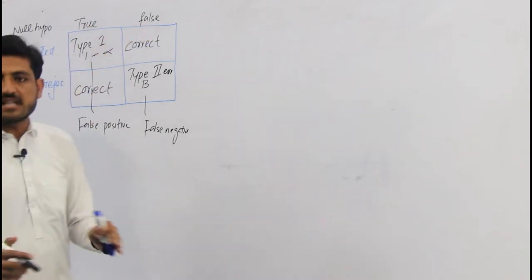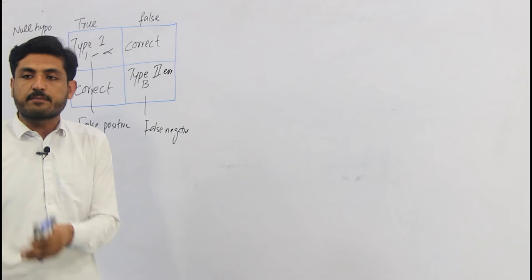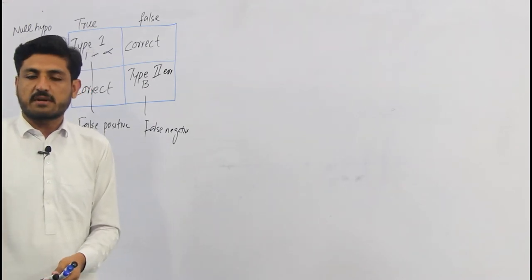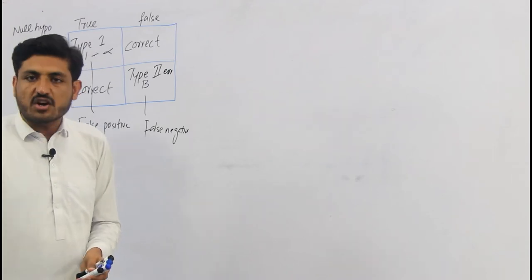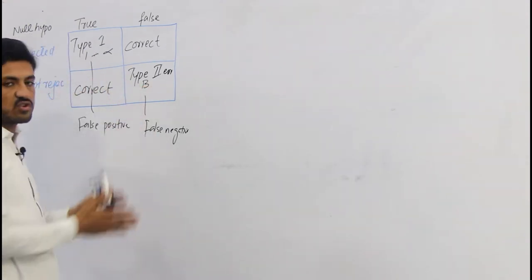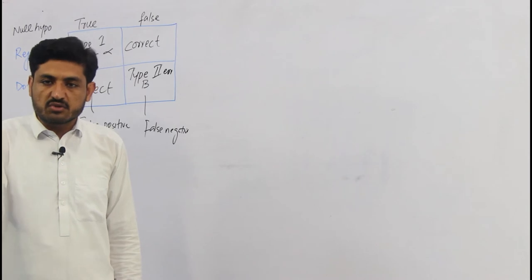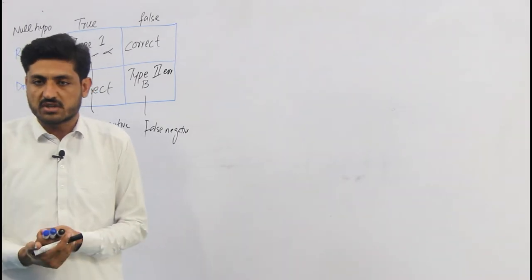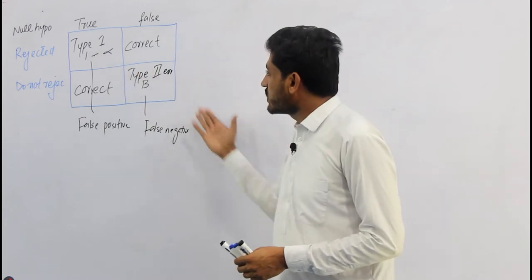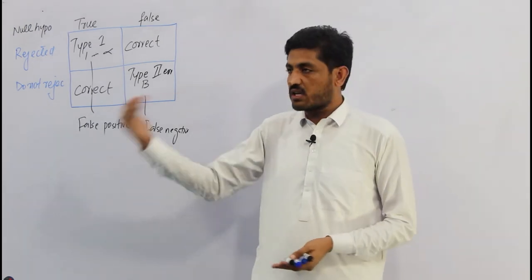اگر null hypothesis false ہے — یعنی actually drug کا disease پر effect ہے — لیکن ہم اس null hypothesis کو reject نہ کریں، تو ہم Type 2 error کریں گے۔ اس صورت میں جو drug effective ہے، اسے ہم مریض کو نہیں دے پا رہے، تو مریض کی condition worse ہو جاتی ہے۔ سوال یہ ہے کہ کونسا error زیادہ dangerous ہے — Type 1 یا Type 2؟ hypothesis testing میں دونوں errors کی chances ہوتی ہیں، لیکن دونوں ایک ساتھ نہیں ہو سکتے۔